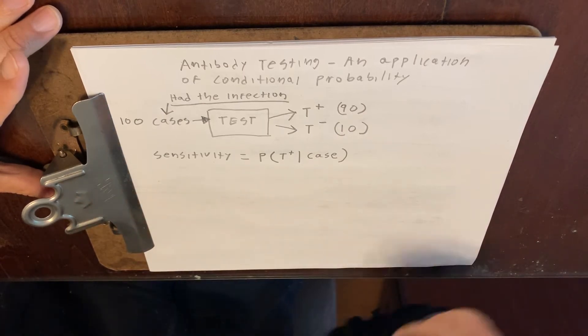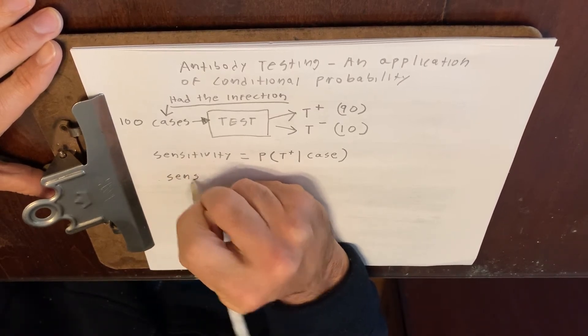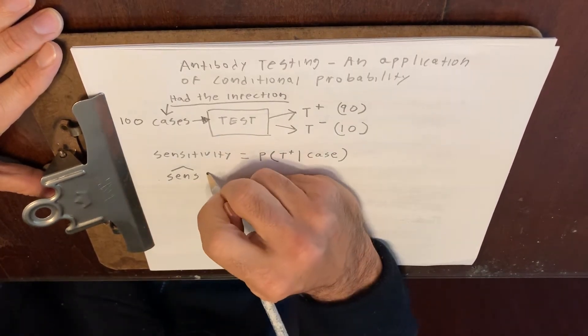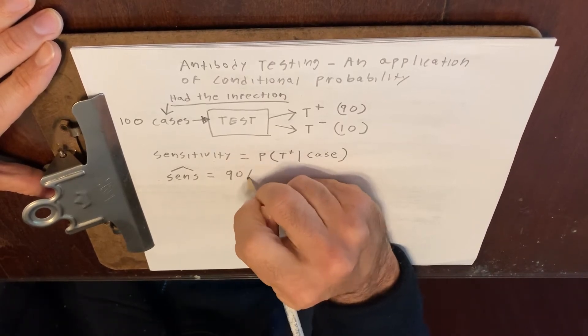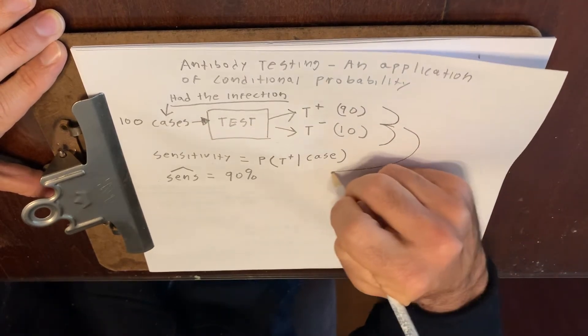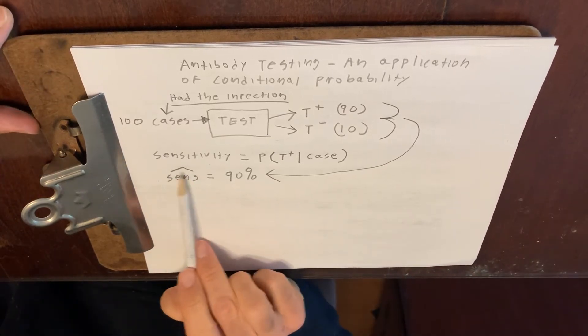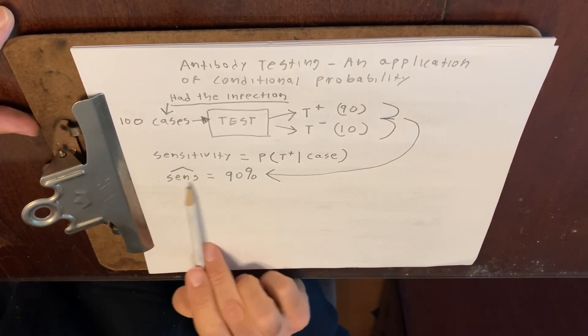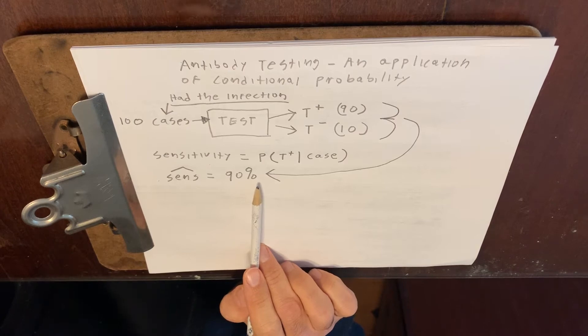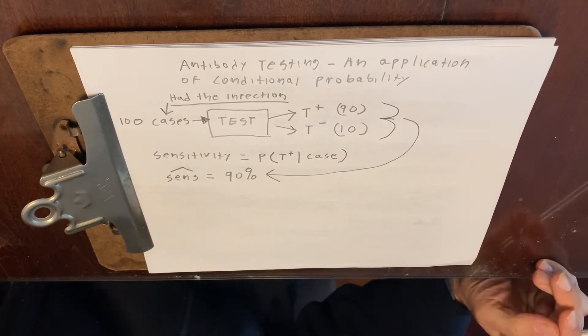So what a statistician would do is say the sensitivity estimate. A statistician might put a little hat over this, right? And say the sensitivity estimate would be 90%, because it's coming from these data over here. Now not everybody will put the hat over the sensitivity. They might just say the sensitivity of the test is 90%. But anybody knows that we don't know the true sensitivity of the test. We test the test with cases and we get the sensitivity.